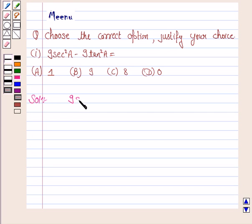The given expression is 9 secant square A minus 9 tan square A. Now we take 9 common. So we have 9 into secant square A minus tan square A.